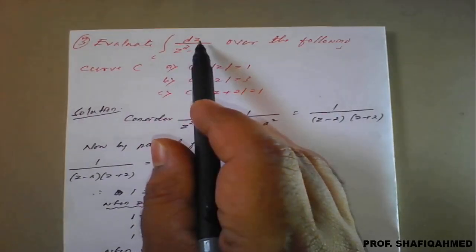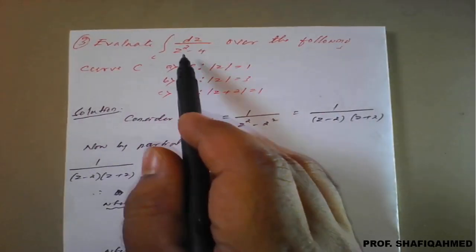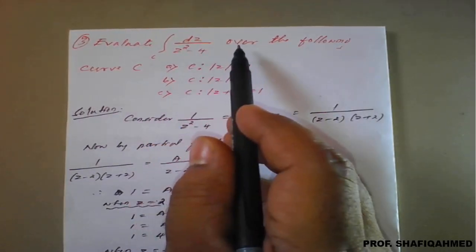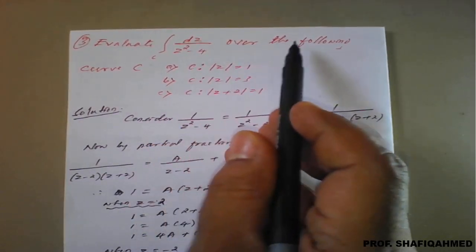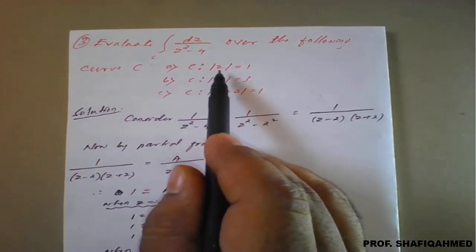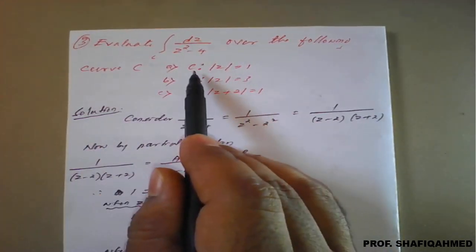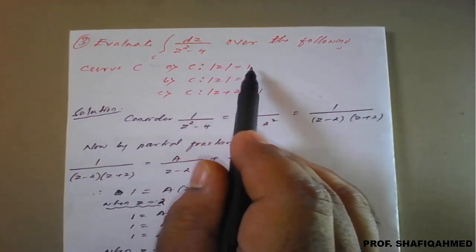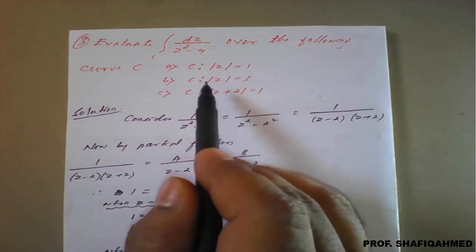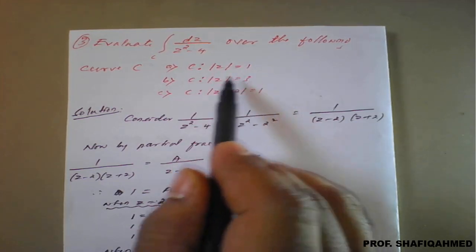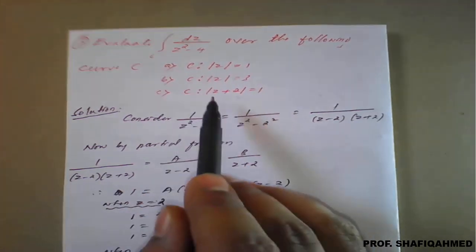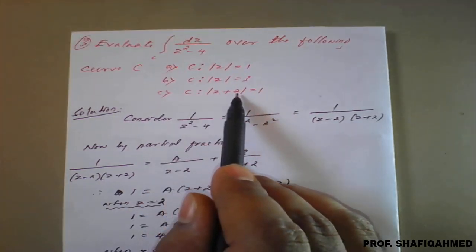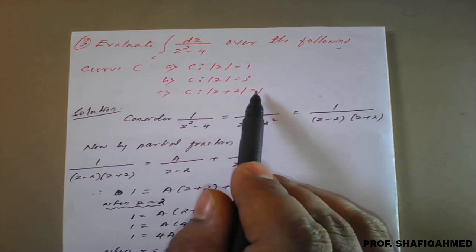Evaluate the integration of f(z) dz upon z² minus 4 over the following curves. They have given 3 curves, so 3 results will be obtained. The curves are: |z| = 1, |z| = 3, and |z+2| = 1/3.